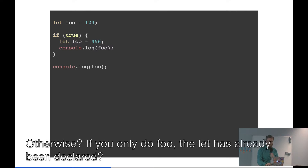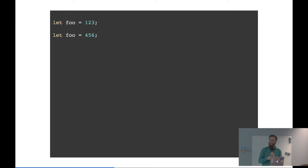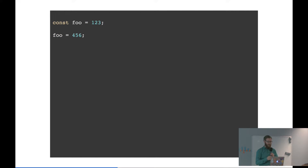So with let, if you declare the same variable twice, it will generate an error. With var, you can override it — doing var foo twice is okay. With let, it says that foo already exists and you can't declare another foo. And then you also have constants — you assign it once and you can never reassign it. This will also generate an error because it's constantly assigned to 123.